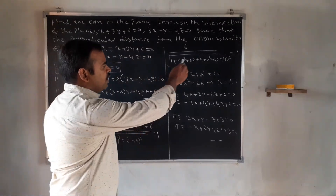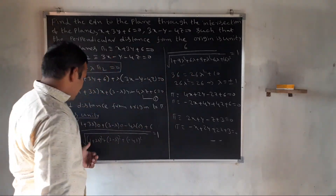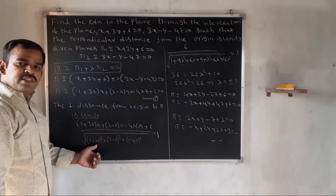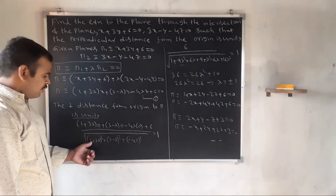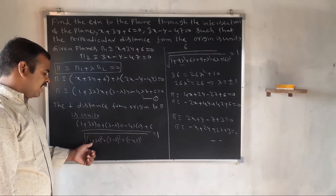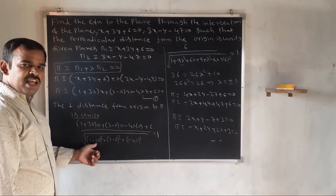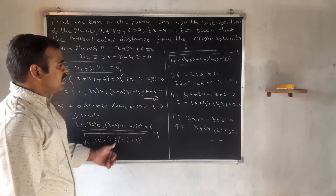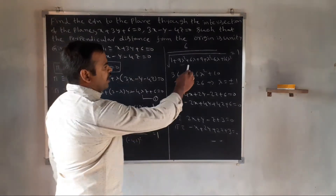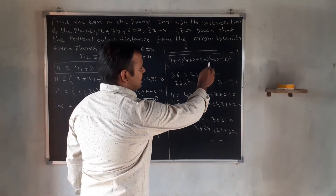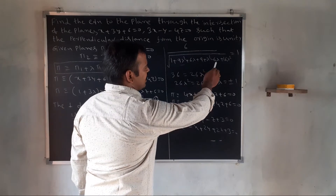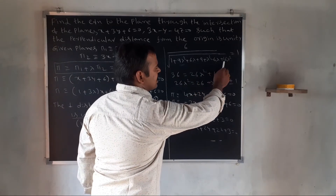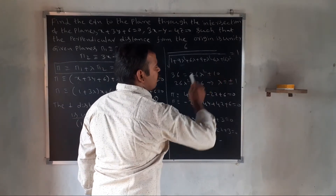Expanding: 6 divided by square root of 1 plus 9 lambda square plus 6 lambda, plus 9 plus lambda square minus 6 lambda, plus 16 lambda square equals 1.